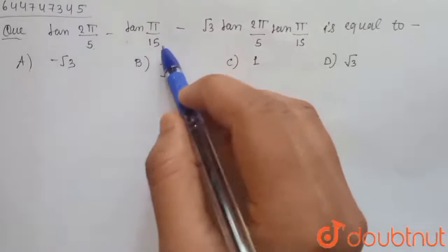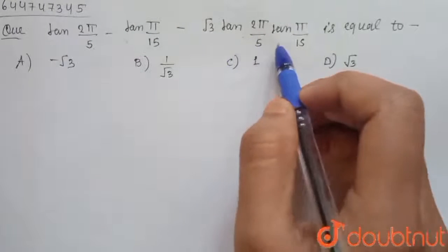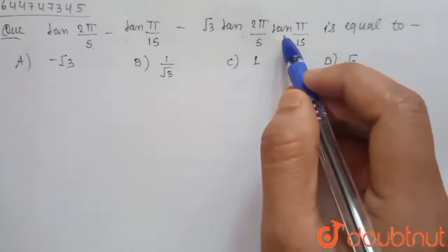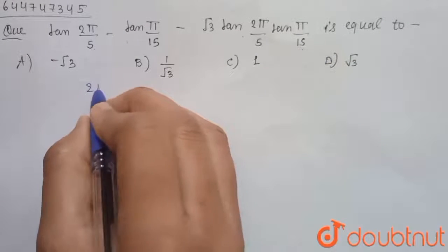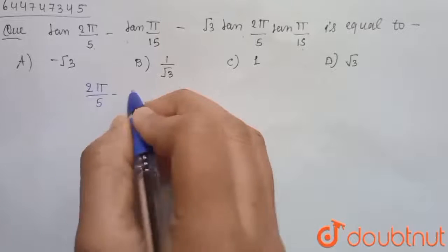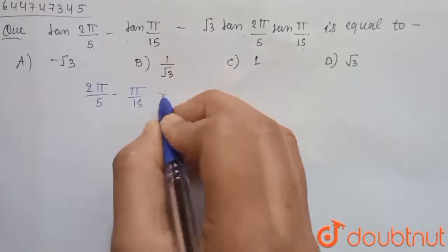5 minus tan π by 15 minus √3 tan 2π by 5 into tan π by 15 is equal to. So here we know that 2π by 5 minus π by 15 is equal